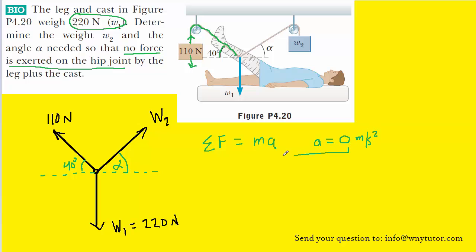And when we plug in 0 meters per second squared into the acceleration, we would have 0 essentially on the right side of Newton's second law. So in short, the sum of the forces acting on this leg must equal 0.